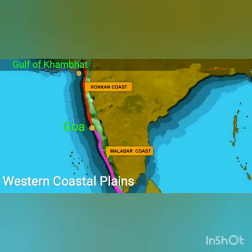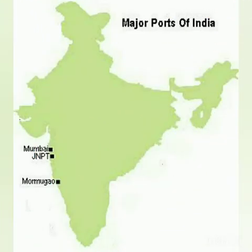The narrow coastal plain that lies between the Gulf of Khambhat and Goa is called the Konkan coast. This region is not entirely plain. Mumbai and Marmagao are the main seaports here.